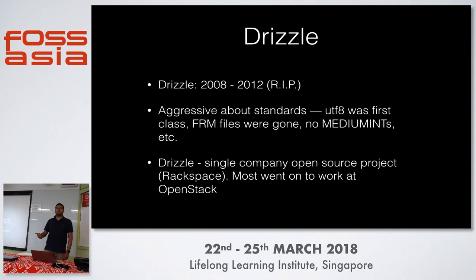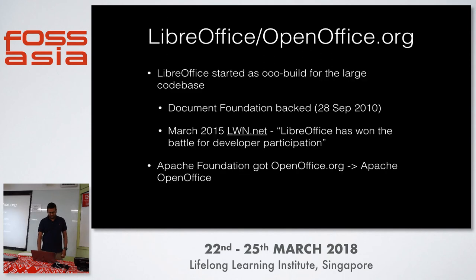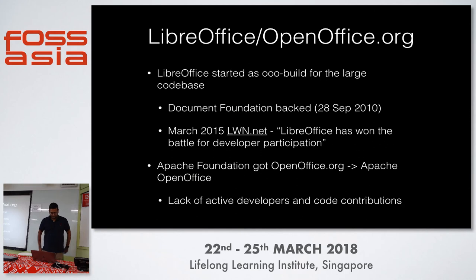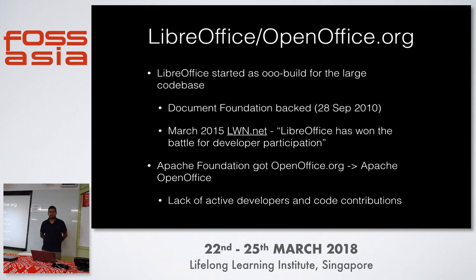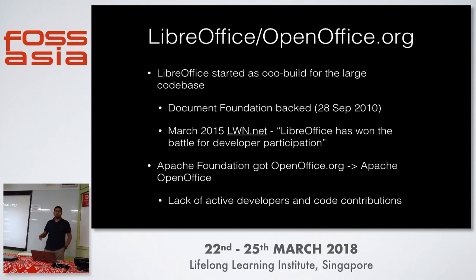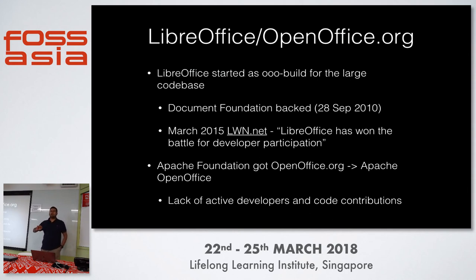LibreOffice forked in late 2010. It started its life at Star, then Sun purchased it and had an OpenOffice project around it. The fork was made very possible by the fact that there was something called OBuild, started by Michael Meeks of then Ximian and Novell — now Collabora. The goal was to make it easy to build on Linux. OBuild was a way to make OpenOffice build easily across all Linux distributions.